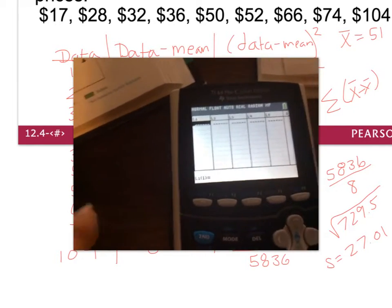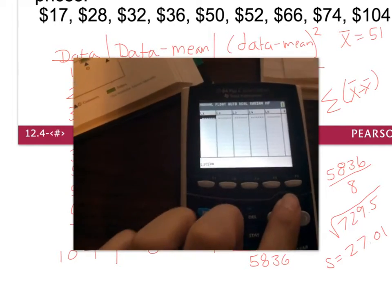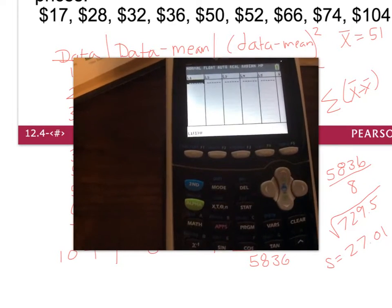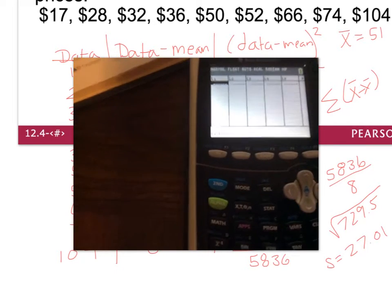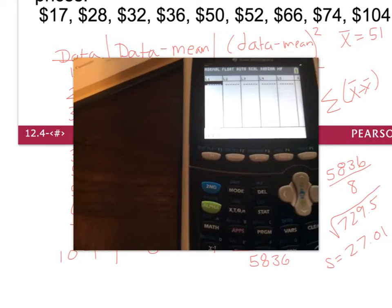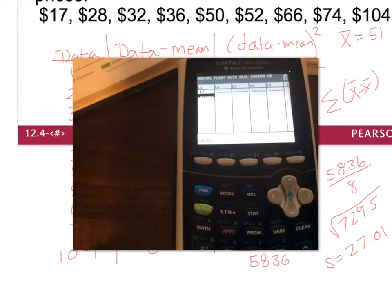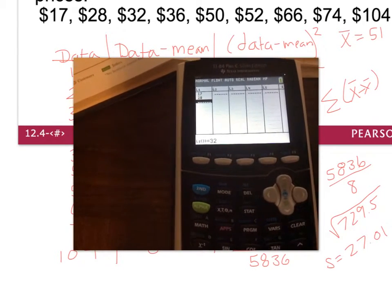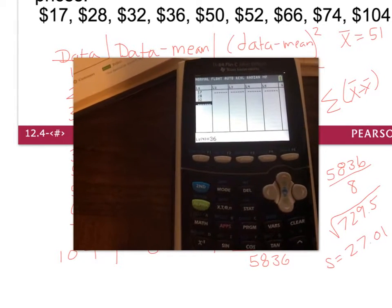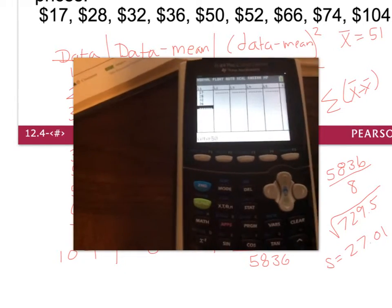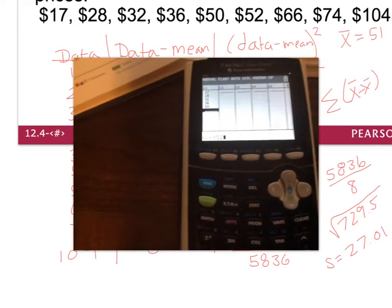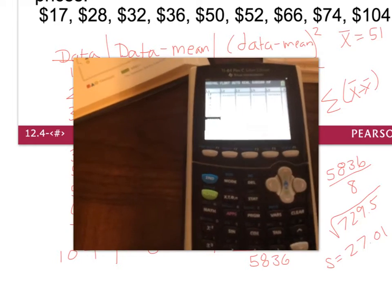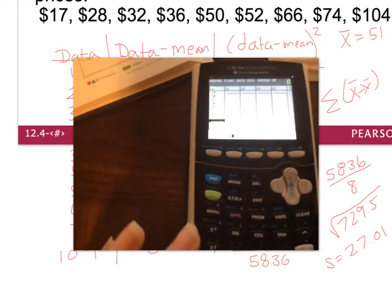With List 1 empty, type in the data: 17, 28, 32, 36, 50, 52, 66, 74, 104, pressing Enter after each value. Once all the data is entered, press 2nd Quit to exit the screen.